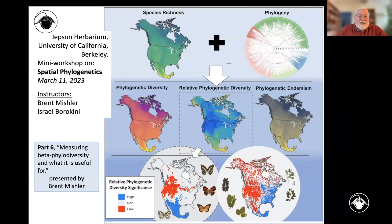Here is section six of this workshop, where we're going to cover that other aspect of biodiversity that I mentioned, which is called beta diversity.